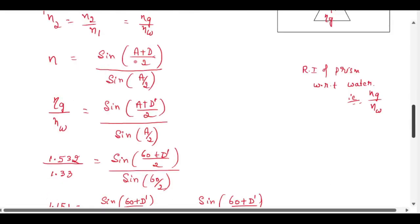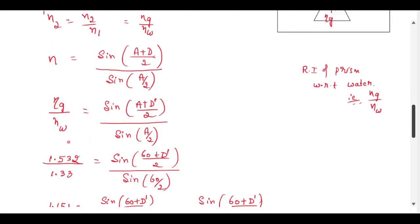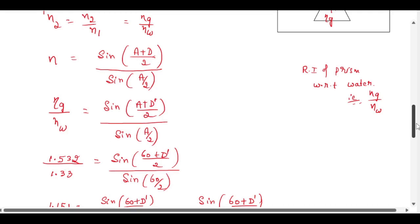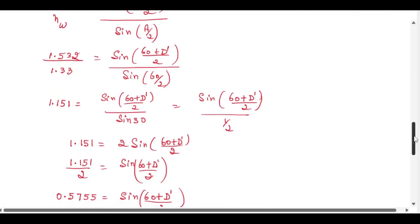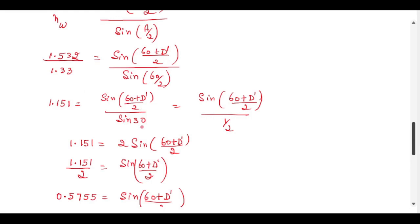We use the same formula: N = sin((A + D)/2) divided by sin(A/2). Here D becomes D' and N is the refractive index of glass with respect to water. We know n_g, n_w, and A; we need to find D'. On substituting values, we get 1.151 = sin((60 + D')/2) divided by sin(30).